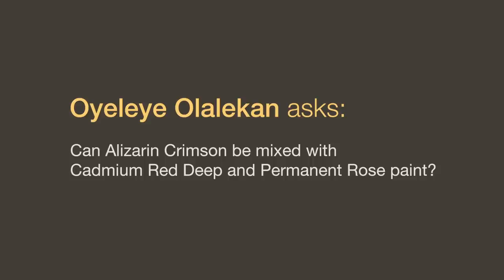Can alizarin crimson be mixed with cadmium red deep and permanent rose paint? No, it cannot. Whenever you get into those really dark colors, you've got to use a permanent alizarin or a color like permanent alizarin. The cadmiums instantly will raise the value much lighter, so you just can't get to those deep, dark blood reds that you can get with permanent alizarin or some of the lake colors. The cadmiums just won't do it — too bright.